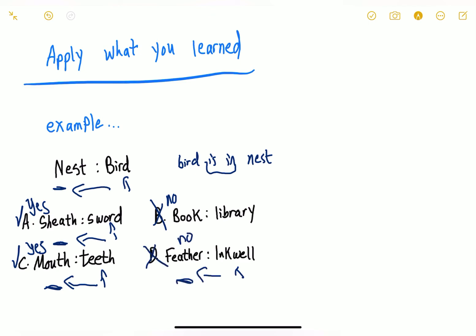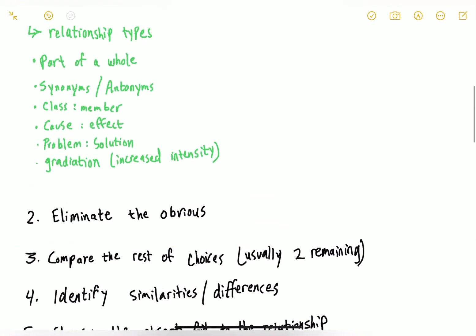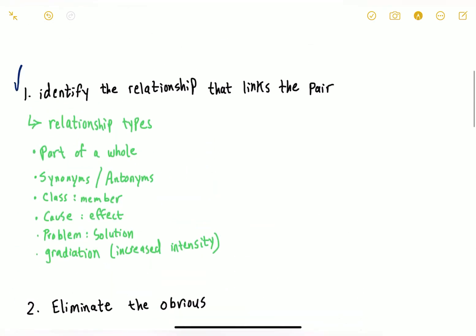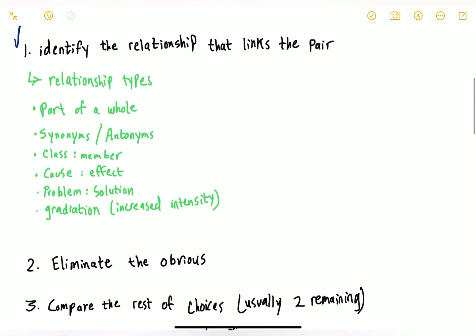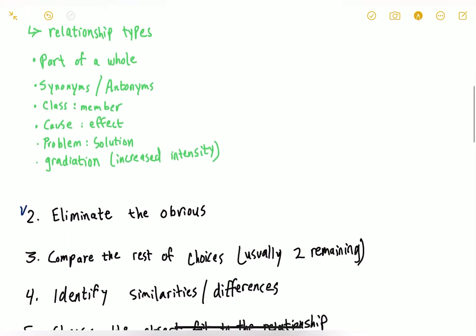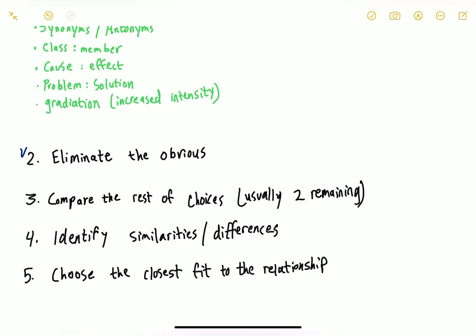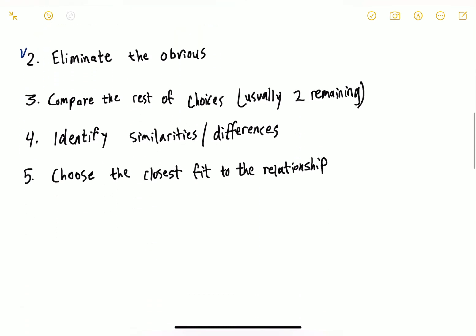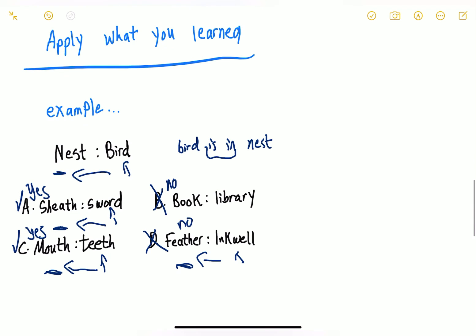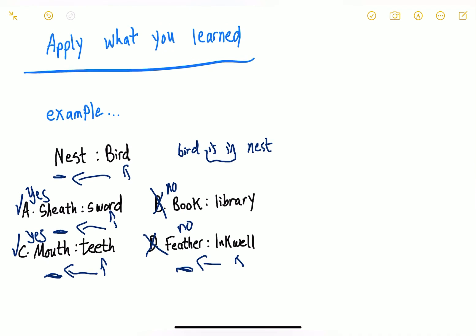Now we have two choices left. What we did was we went through step one, we identified the relationship. Step two, we eliminated the obvious. Step three, we have to compare the choices and identify the similarities and differences.